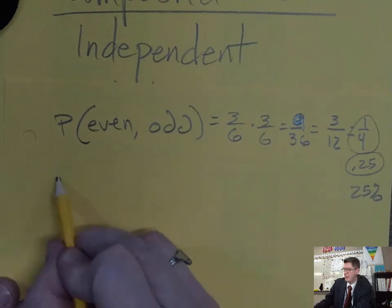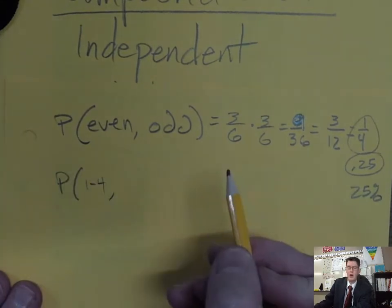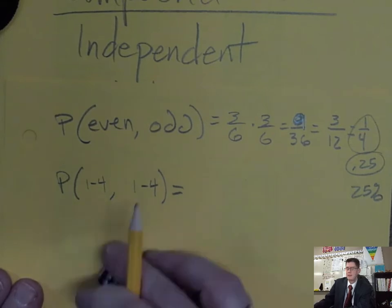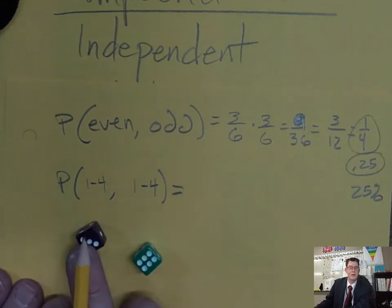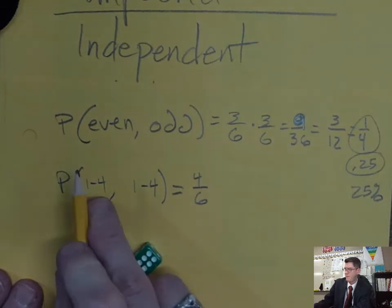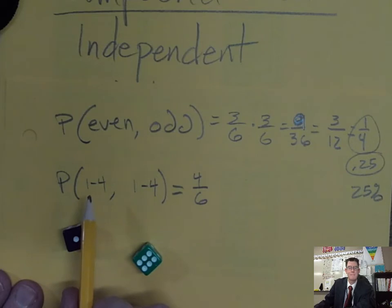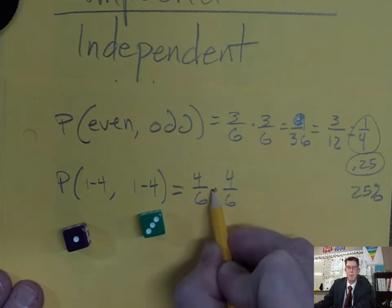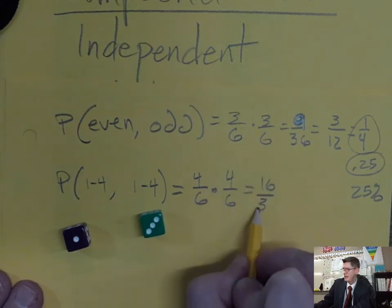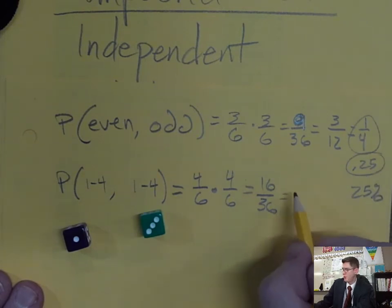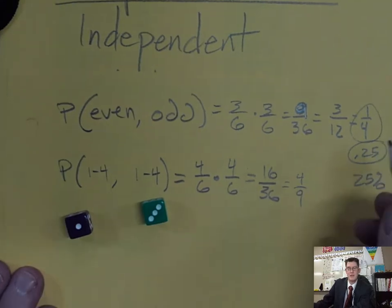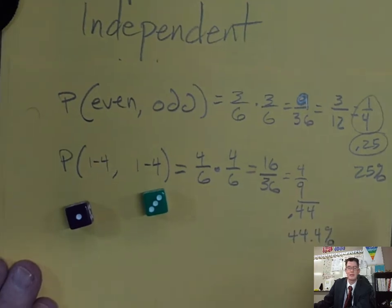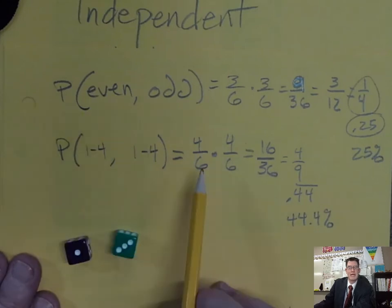What's the probability of getting a one through four on the first die and then a one through four on the second die? For the first die, there are four ways to get a number from one through four, so the probability is 4/6. On the second die, same thing — 4/6. Multiply them together: 4 times 4 is 16, 6 times 6 is 36, giving you 16/36. Four goes into both, so it reduces to 4/9, or about 0.444 — 44.4 percent.